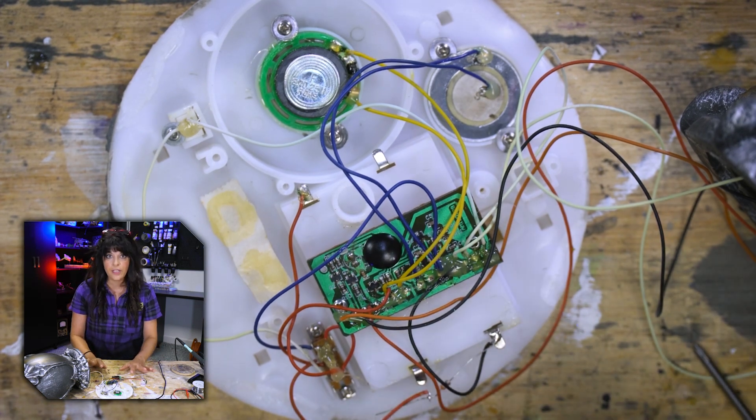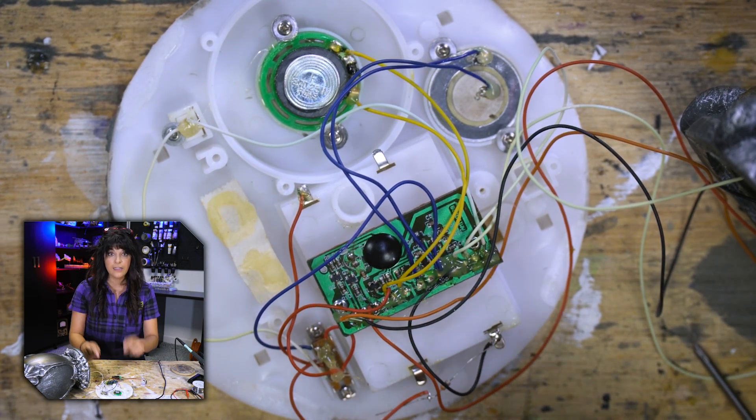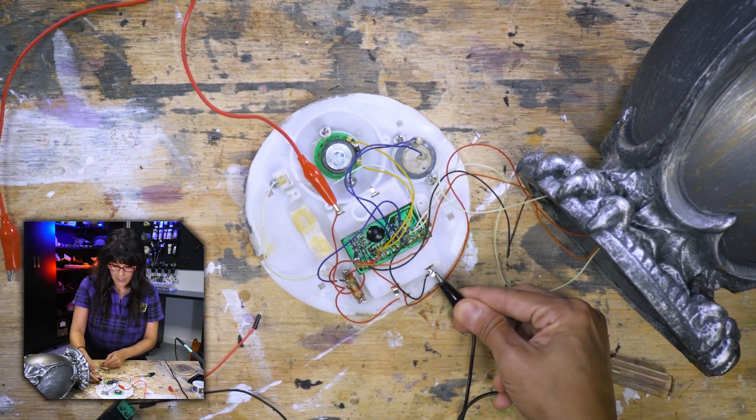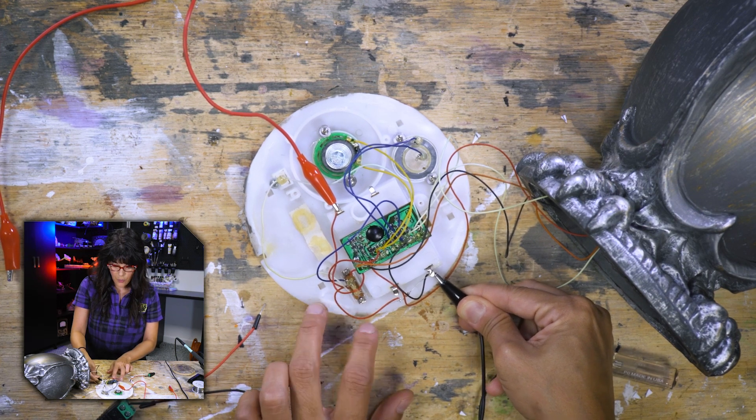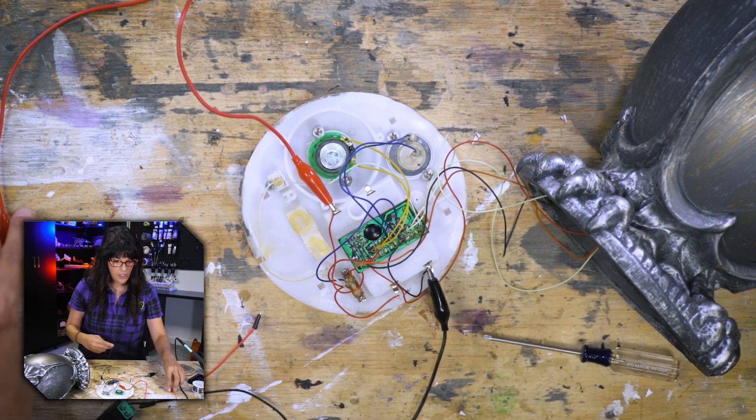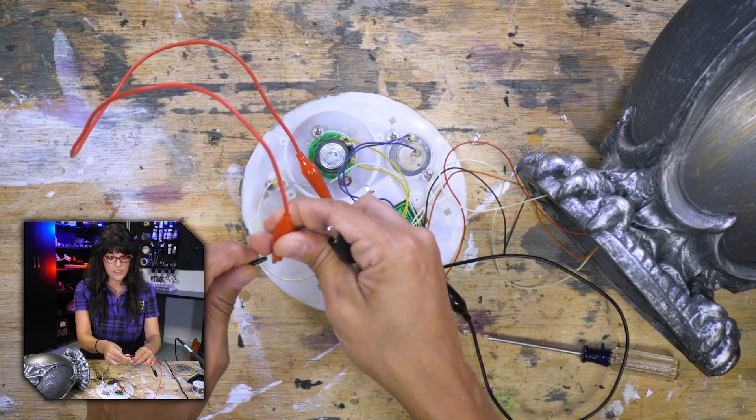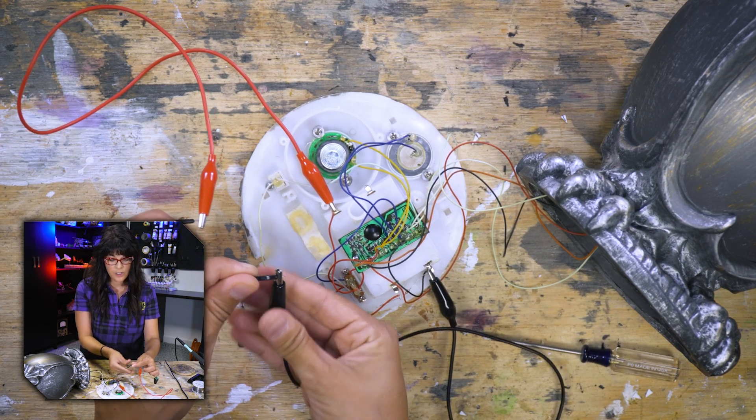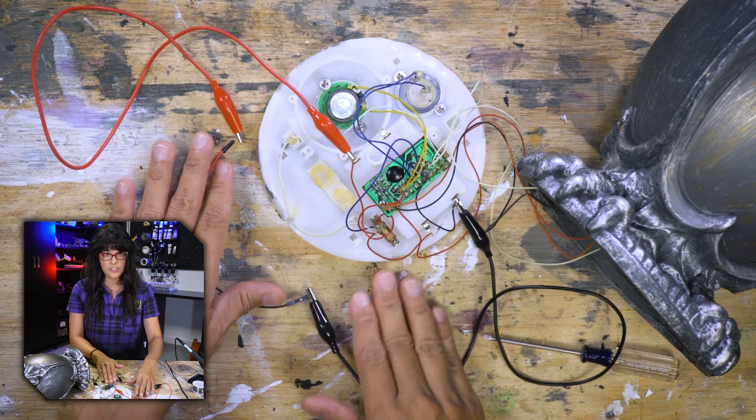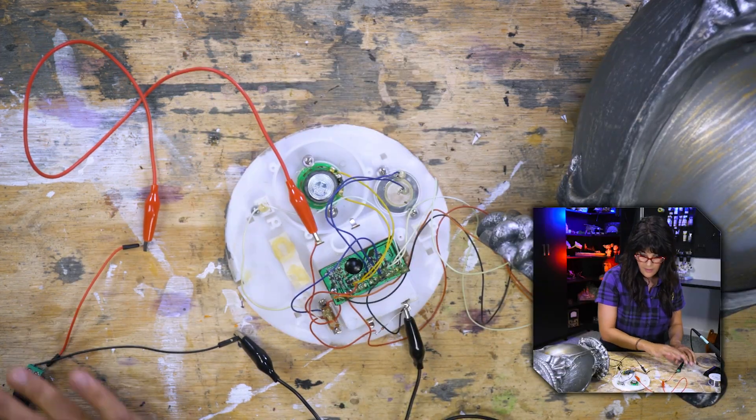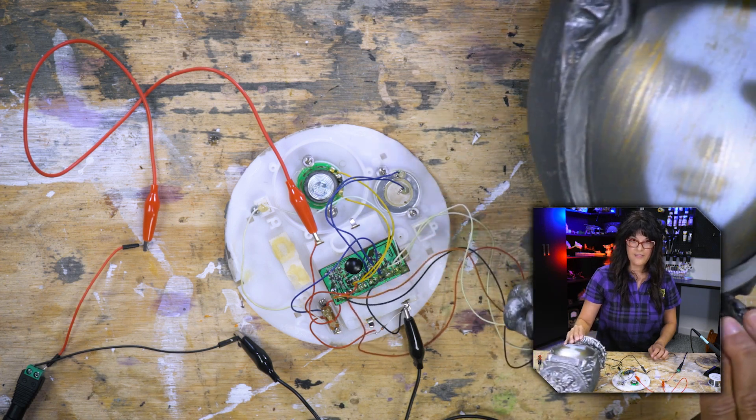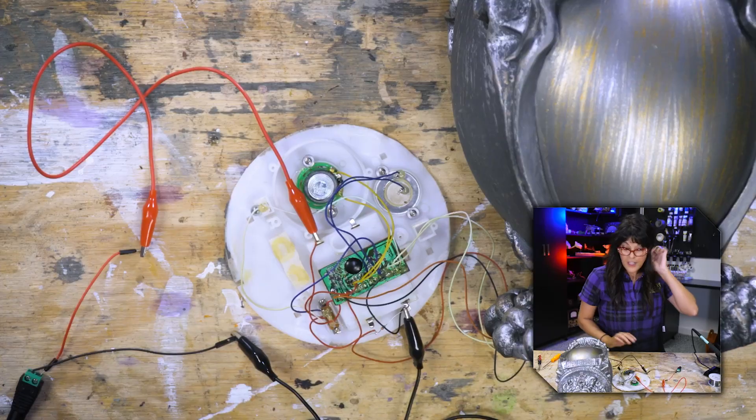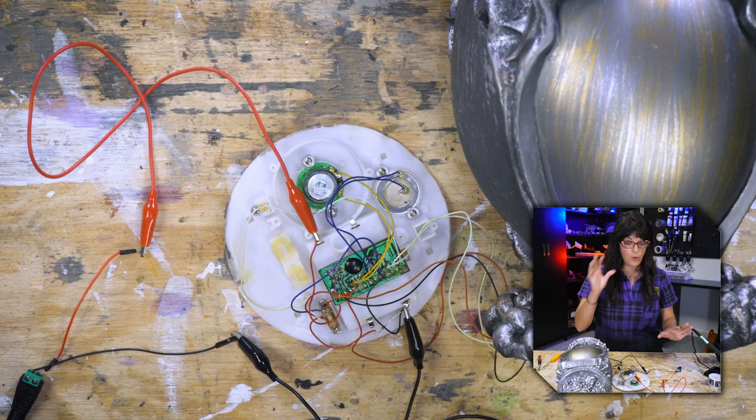Before we wire everything up, why don't we double check that the connections that I suspect I'm going to make are indeed correct. So I'm going to clamp that there and I'm going to clamp that here. And you always want to make sure negative and positive aren't touching. That's why it's important to do this with the power off. It is not connected to anything. So we can kind of lay out our wires in a way where there's no touching, no electronic cooties. So we've confirmed that this is the connections that we want to make.